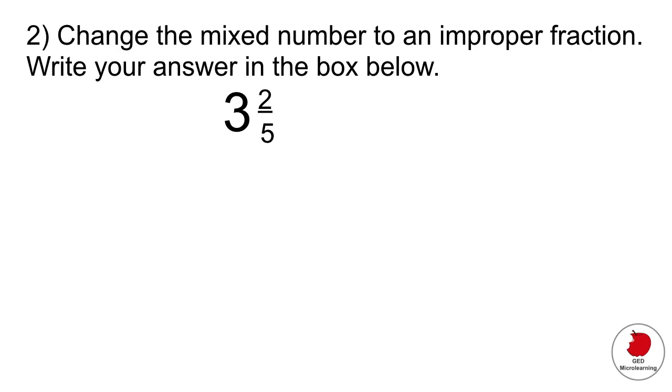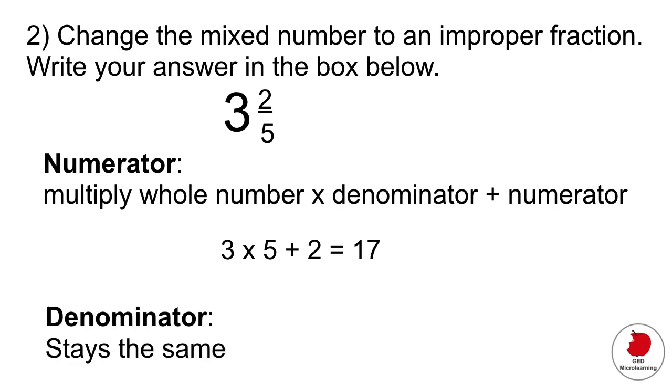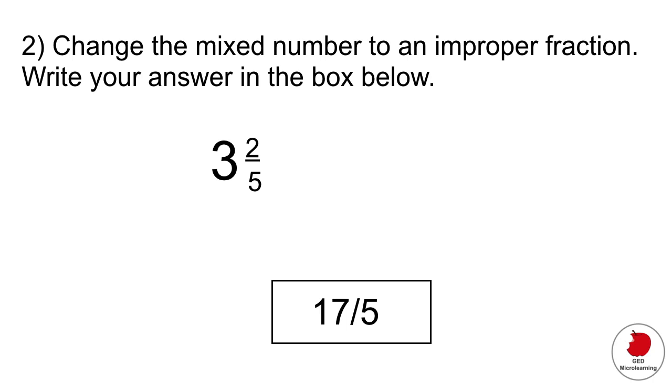So how do you change this number into an improper fraction? For the numerator, you're going to take the whole number which is 3 and multiply it by the denominator which is 5, and then add the numerator which is 2. So it would be 3 times 5, that's 15 plus 2, equals 17. That's your new numerator. The denominator stays the same at 5. Ultimately you end up with 17 over 5.